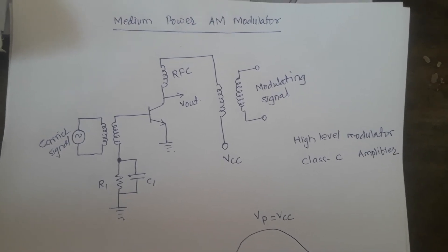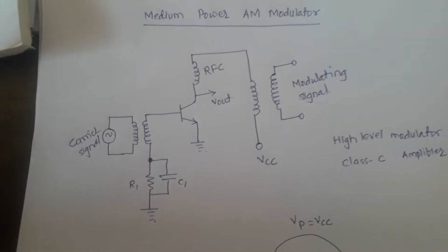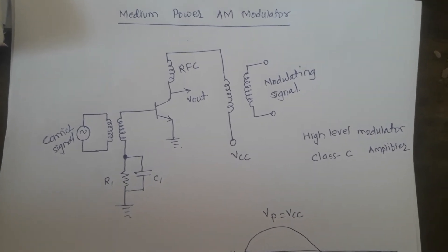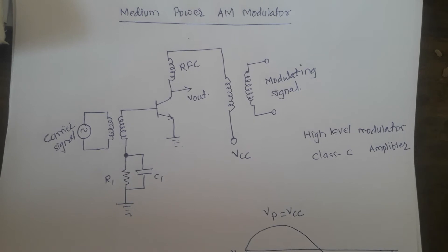As we are using a class C amplifier, the efficiency is increased by 80% which is very much higher than that of your class A type of amplifier.